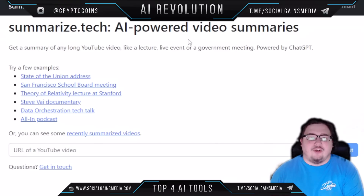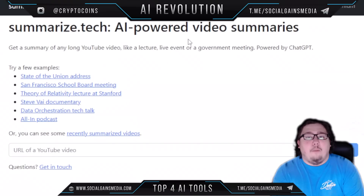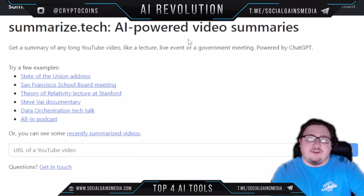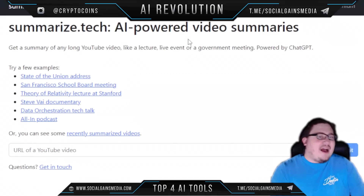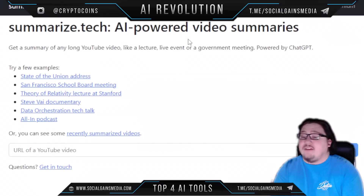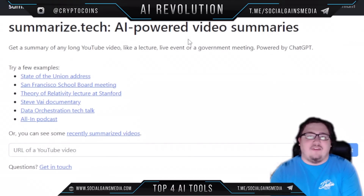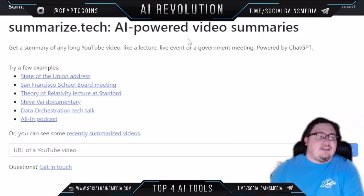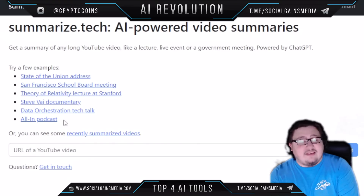The next tool is one of my personal favorites — it adds so much to your day in terms of productivity. Let's say you're watching a YouTube video and it's just dragging on and on, and you just want to get to the conclusion. Well, this is the tool for you. It's called summarize.tech, and it's an AI-powered video summary tool. You can get a summary of any long YouTube video — like a lecture, live event, or a government meeting.